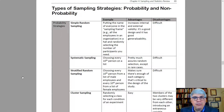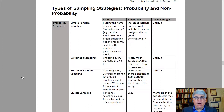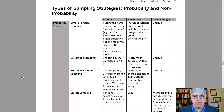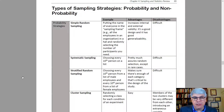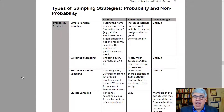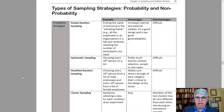Probability strategies are those ways of getting people to participate where people are randomly selected and therefore representative of the population in general. Non-probability strategies are where you get whoever you can to participate, but they might not represent the population nearly as well.